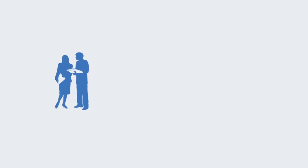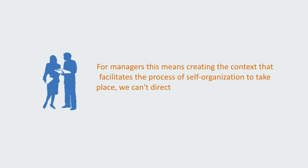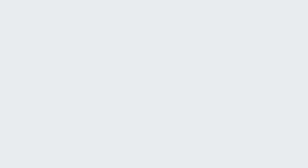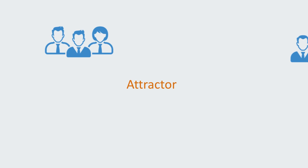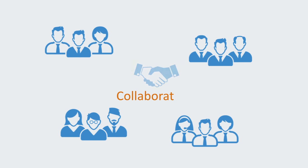Thus, instead of directly aligning the actions of the members towards the desired global outcome, we instead create the context or platform within which the members can interact so as to coordinate locally, and then out of this we will get the emergence of some global organization. For managers, this means creating the context that facilitates the process of self-organization to take place. We can't directly control the outcome to the system, but we can influence the initial conditions. We can do this by creating a conducive context that represents an attractor towards coordination and cooperation between the members. The big idea here is that of collaboration. We no longer have control, but we can enable the context and conditions for collaboration to emerge.